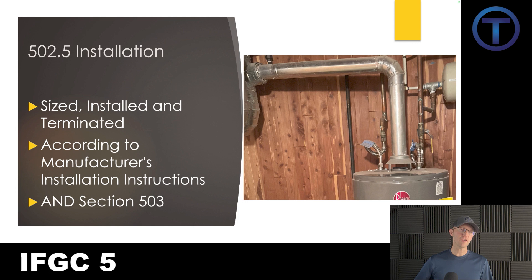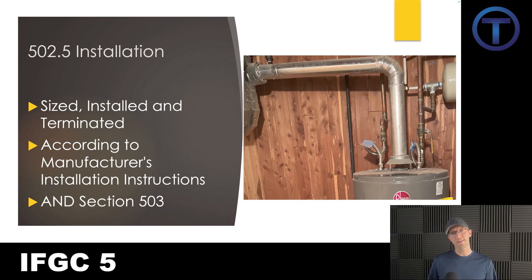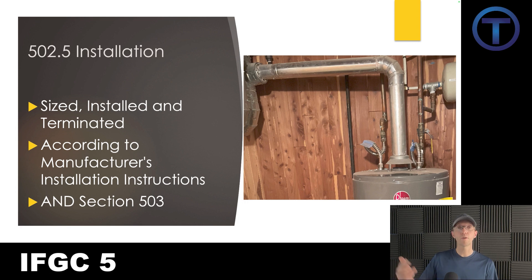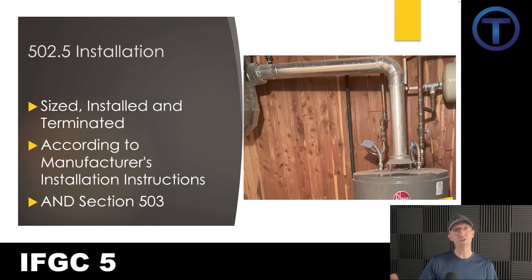502.5 talks about installation, stating that flue pipe has to be sized, installed, and terminated according to the requirements in the code and the manufacturer's installation instructions. Code frequently refers us to manufacturer installation instructions, which is particularly important for flue pipe — check clearances from combustibles, how the pipe connects or interlocks, and any other manufacturer requirements for safe installation. They also refer us again to section 503, which has a lot of important detail we'll cover next.